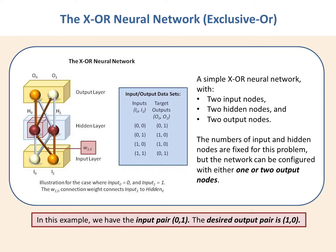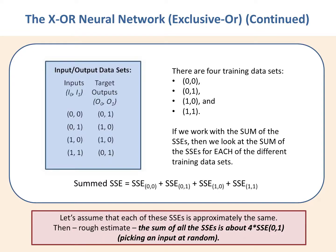In the XOR problem, you train a neural network to distinguish four different data sets: zero-zero, zero-one, one-zero, and one-one. For the zero-zero and one-one inputs, we want a zero from the first output node and a one from the second. For the zero-one or one-zero inputs, we want a one from the first output node and a zero from the second.